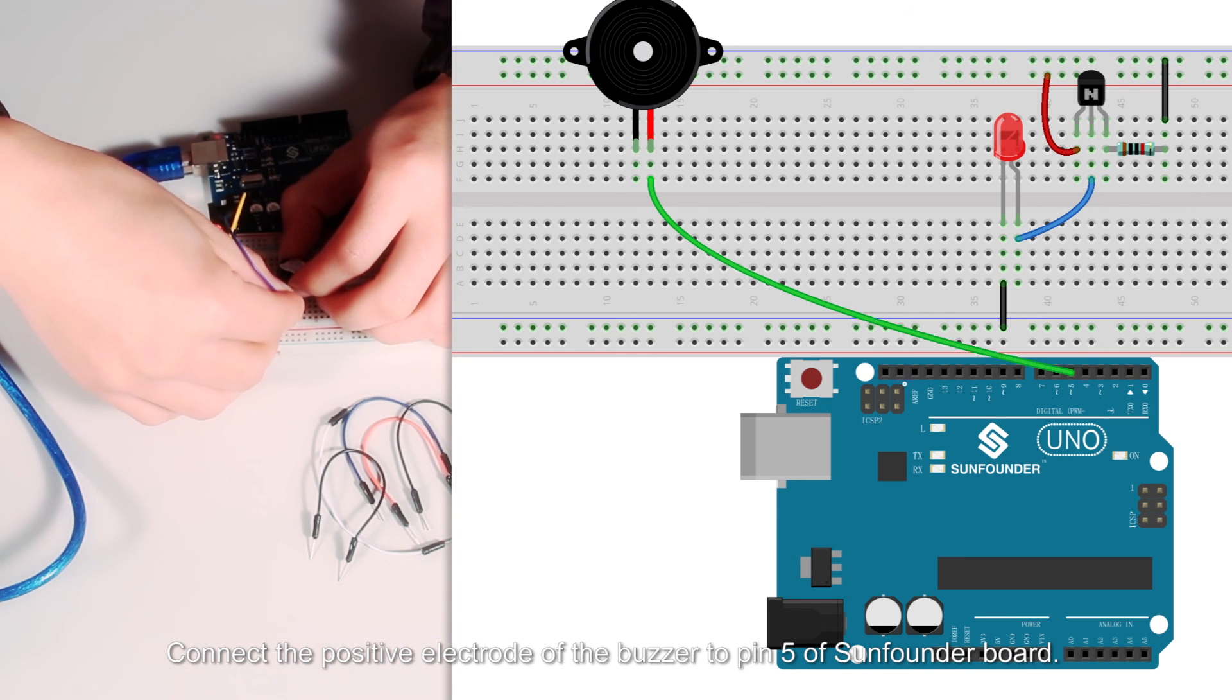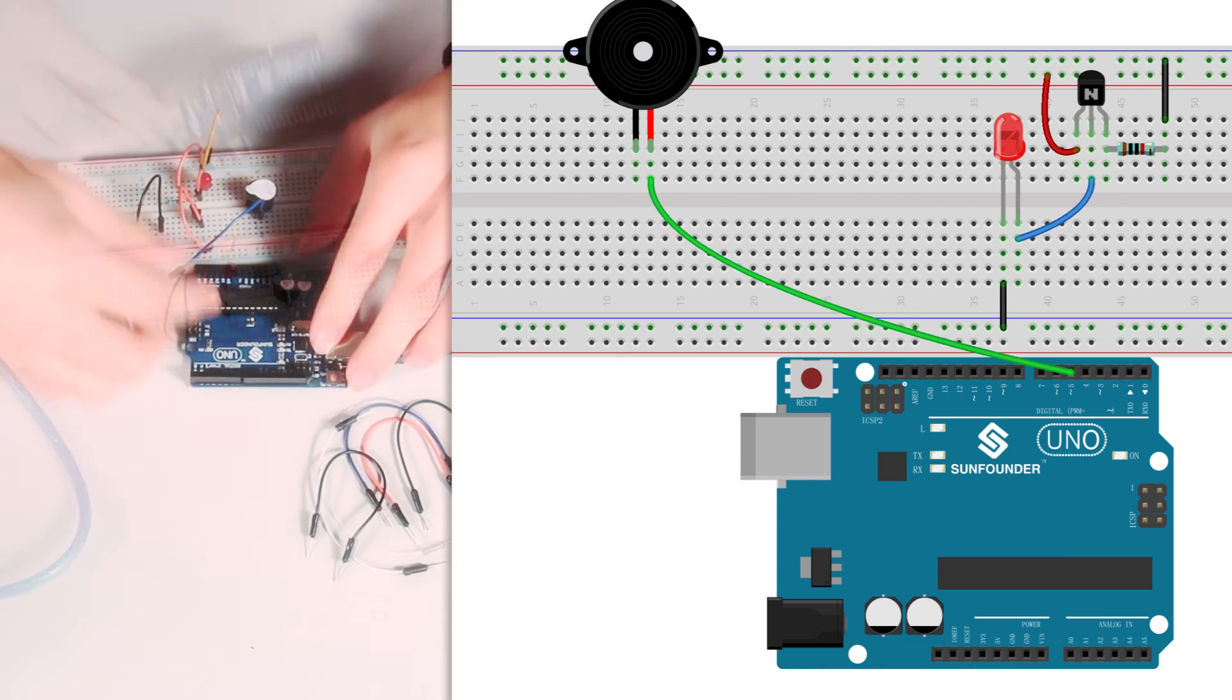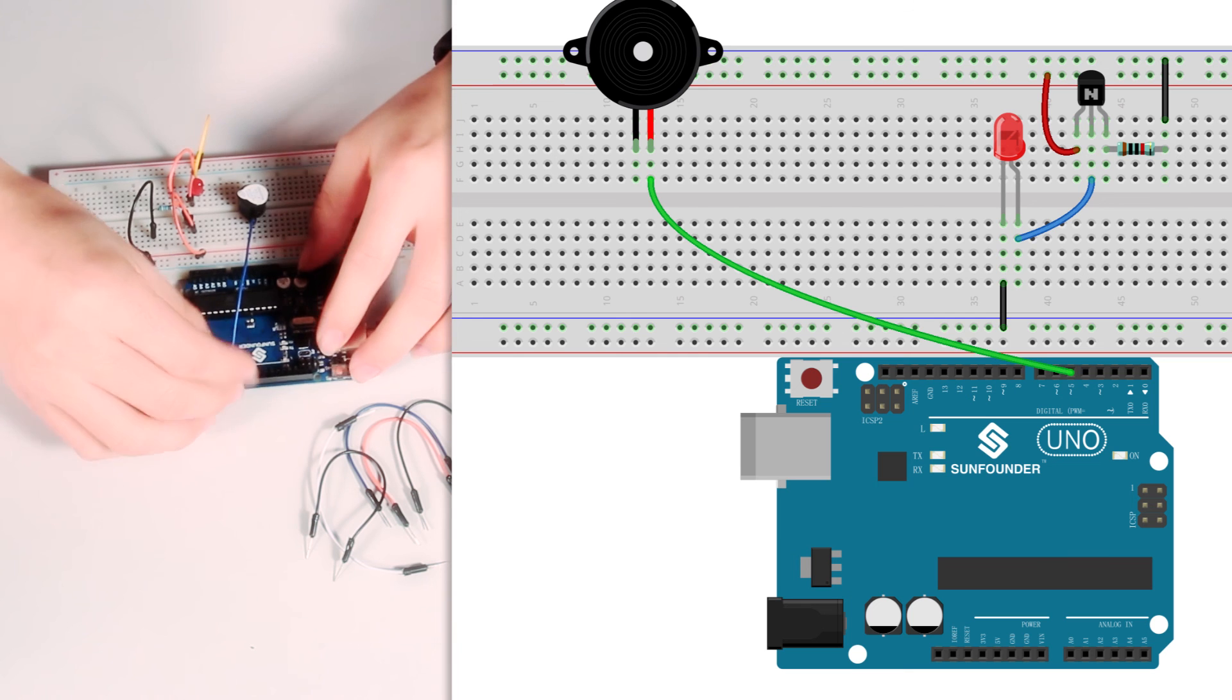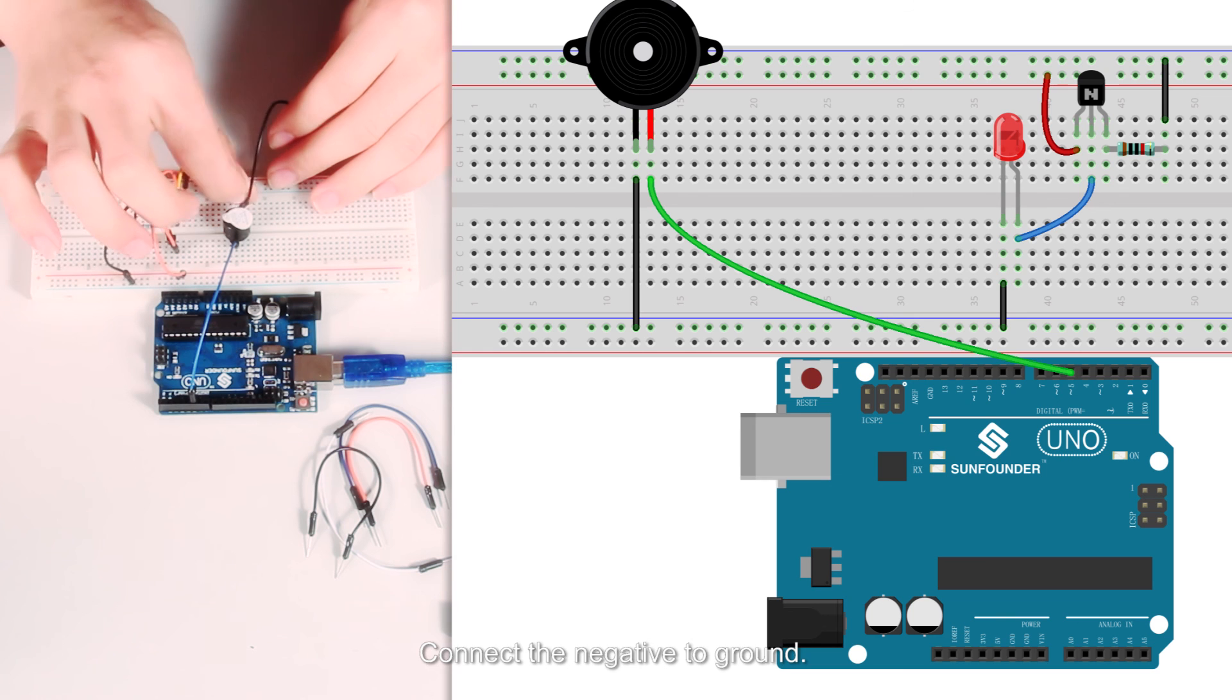Connect the positive pole of the buzzer to pin 5 of the SanFounder board. Connect the negative to ground.